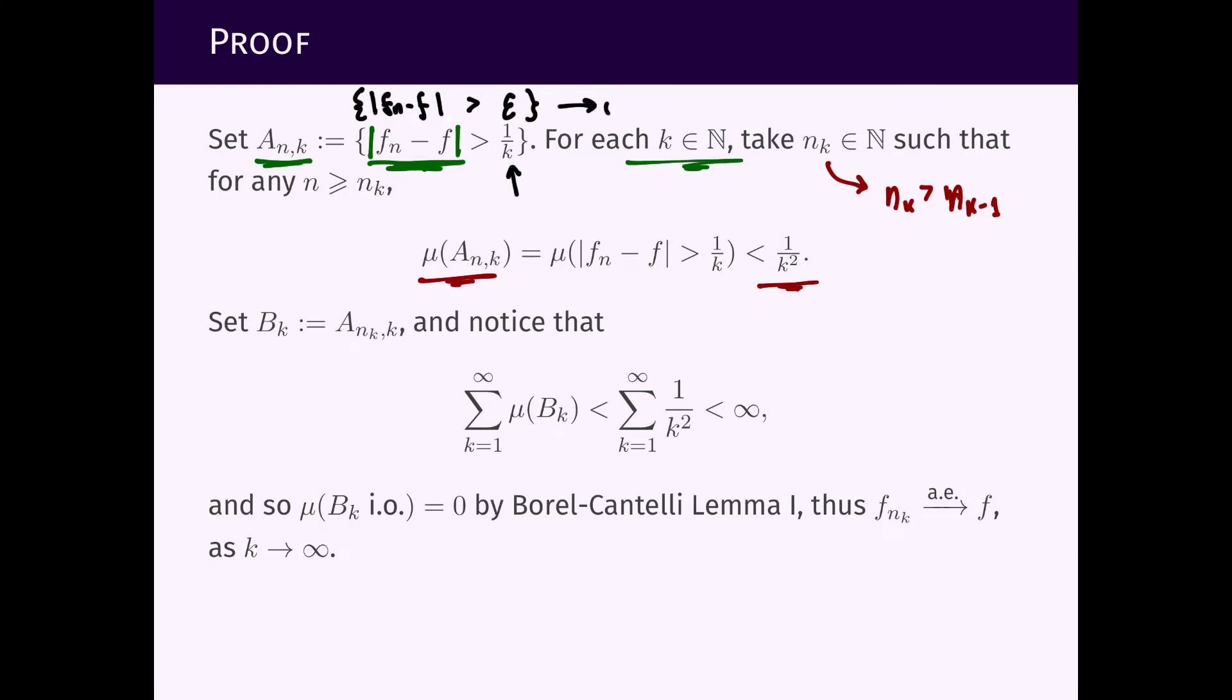converges to zero as n tends to infinity. And since it converges to zero we just need to wait long enough and we'll find n_k, it depends on k just like here it depends on epsilon, such that for every n larger than n_k the measure of this set will be bounded from above by 1 over k squared.